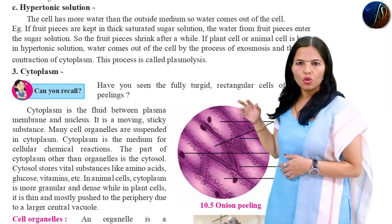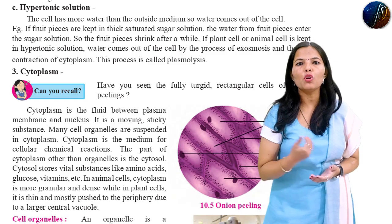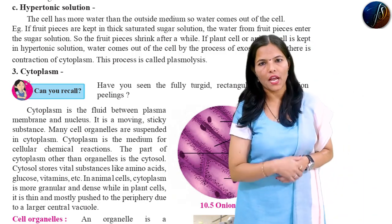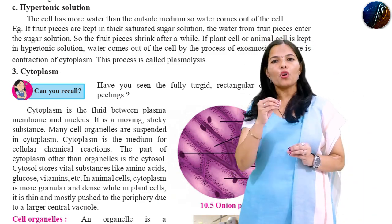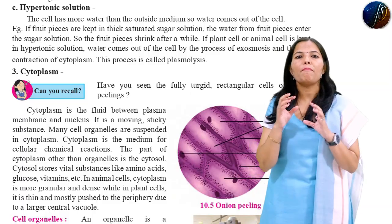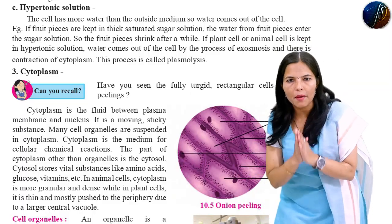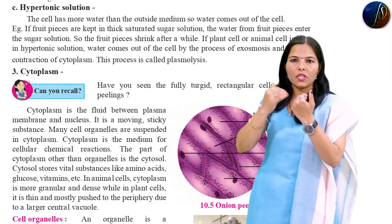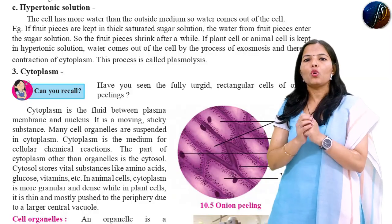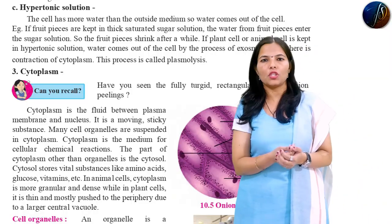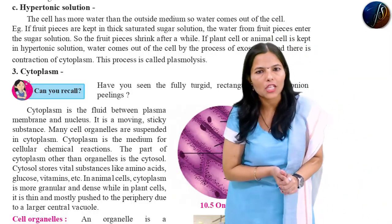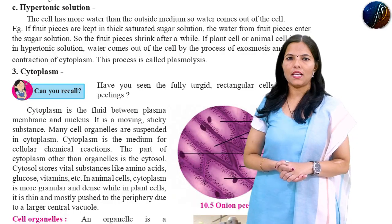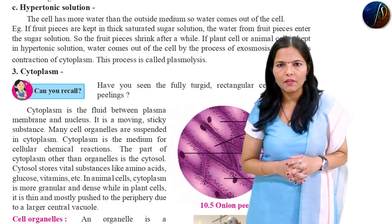Plasmolysis: the fruit pieces shrink after a while if a plant cell or animal cell is kept in a hypertonic solution. Water comes out from the cell by the process of exosmosis, and this process is called plasmolysis.